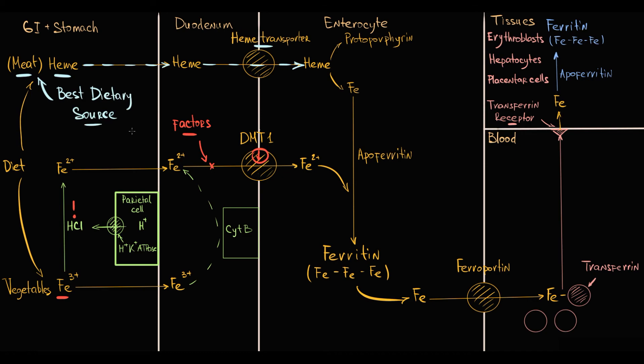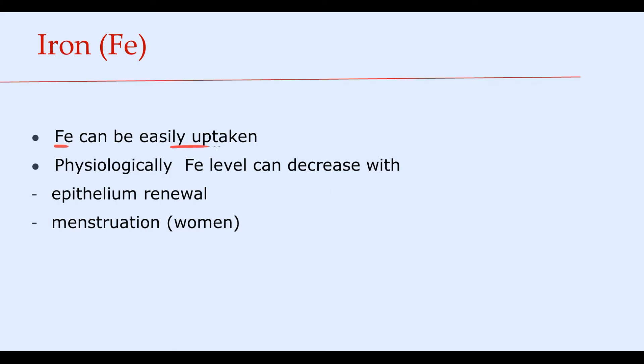Another important concept is that actually we can easily uptake iron, but in fact, once iron is incoming to the blood, it's very difficult to get rid of iron. Physiologically, we lose iron only when our skin sloughs off, or women also lose iron with menstruation. These are basically the only options how we can decrease the amount of iron in our organism.